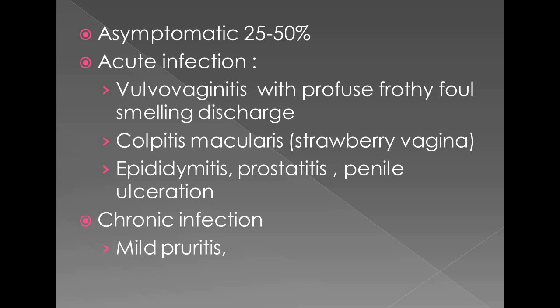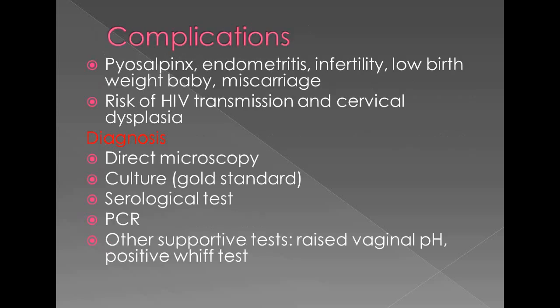In chronic cases, Trichomonas vaginalis is associated with complications especially in females, such as pyosalpinx, endometritis — inflammation of the endometrium — infertility, low birth weight baby, and miscarriage. Due to skin erosion of the vulva, vagina, and penis, there is a high risk of HIV transmission. The epithelial changes of the cervix and vagina can lead to cervical dysplasia, which is a pre-cancer stage before cervical cancer.